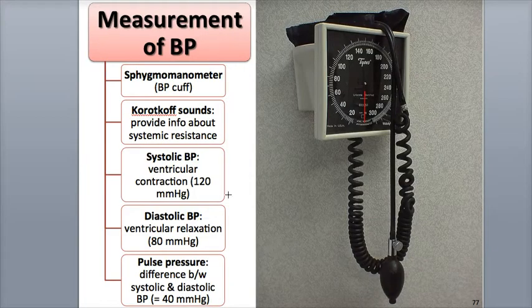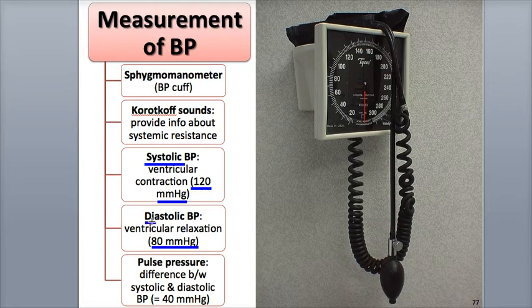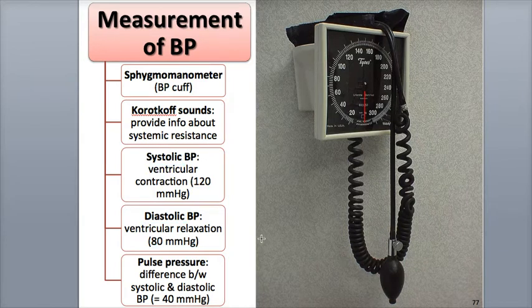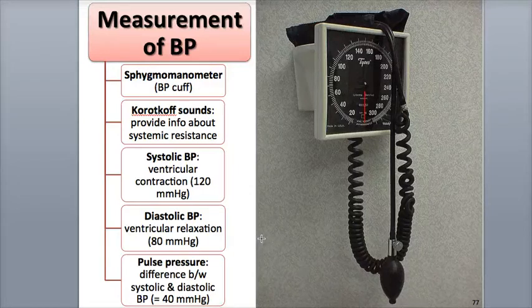In an adult male, the normal blood pressure is 120 millimeters of mercury or less systolic and 80 millimeters of mercury or less diastolic. Young adult women usually have a blood pressure 8 to 10 millimeters of mercury less than young adult men. Blood pressure a little lower than 120 over 80, the systolic over the diastolic number, may indicate good physical fitness.